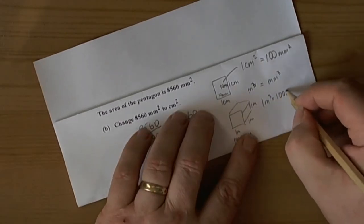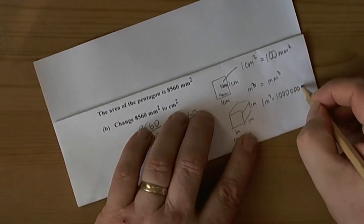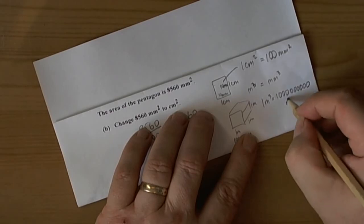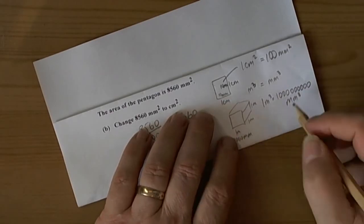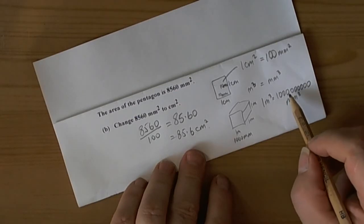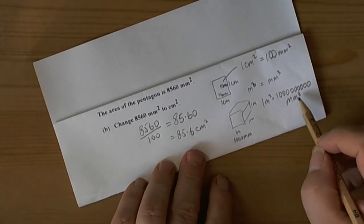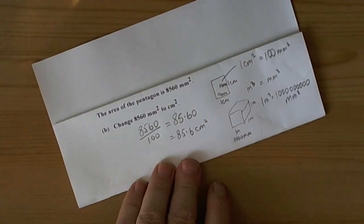...which is actually going to be one followed by nine zeros cubic millimeters. So one cubic meter is one thousand million cubic millimeters.